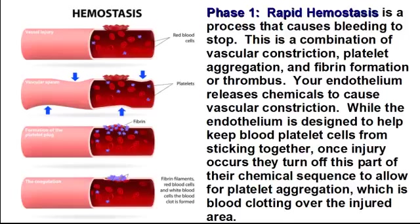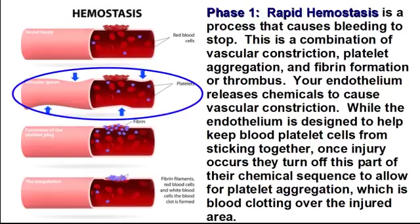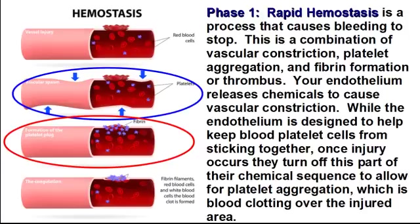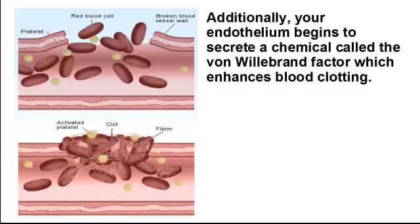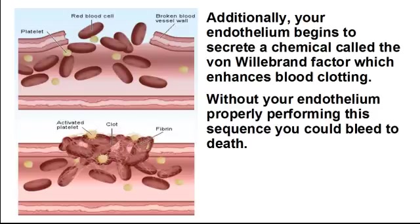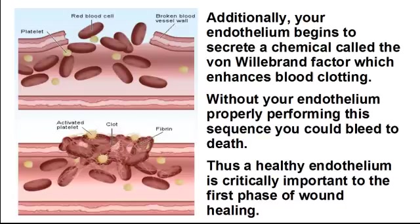Phase one: rapid hemostasis is a process that causes bleeding to stop. This is a combination of vascular constriction, platelet aggregation, and fibrin formation or thrombosis. Your endothelium releases chemicals to cause vascular constriction. While the endothelium is designed to keep blood platelet cells from sticking together, once injury occurs, it turns off this part of its chemical sequence to allow for platelet aggregation — blood clotting over the injured area. Additionally, your endothelium begins to secrete a chemical called the von Willebrand factor, which enhances blood clotting. Without your endothelium properly performing this sequence, you could bleed to death. A healthy endothelium is critically important to the first phase of wound healing.